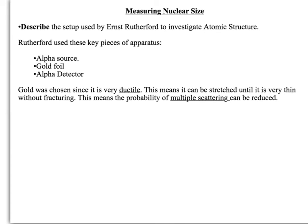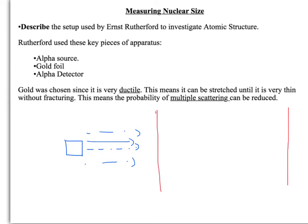So, describing the experimental setup. Essentially, there is an alpha emitter which gives you a beam of alpha particles travelling in one direction. You then have a piece of gold foil which has been stretched out very thin. All around the experiment, you place alpha detectors, and you measure the number of alpha particles that arrive at each location around it.